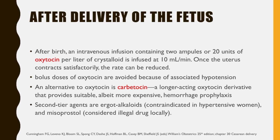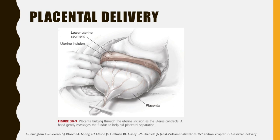After delivery of the fetus, an intravenous infusion containing 20 units of oxytocin per liter of crystalloid is infused at 10 ml per minute. Once the uterus contracts satisfactorily, the rate can be reduced. Bolus doses of oxytocin should be avoided because of associated hypotension. An alternative is carbetocin, a longer-acting oxytocin derivative. Second-line agents are ergot alkaloids, contraindicated in hypertensive and asthmatic women, and misoprostol. For placental delivery, the uterine incision is observed for vigorously bleeding sites, which should be promptly clamped with Pennington or ring forceps. The placenta is then delivered; spontaneous delivery with cord traction may reduce the risk of operative blood loss and infection.